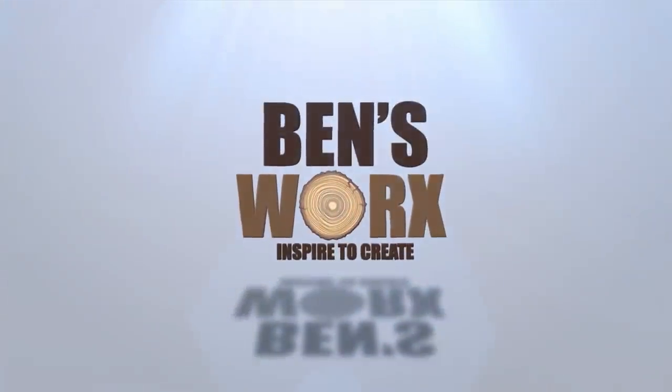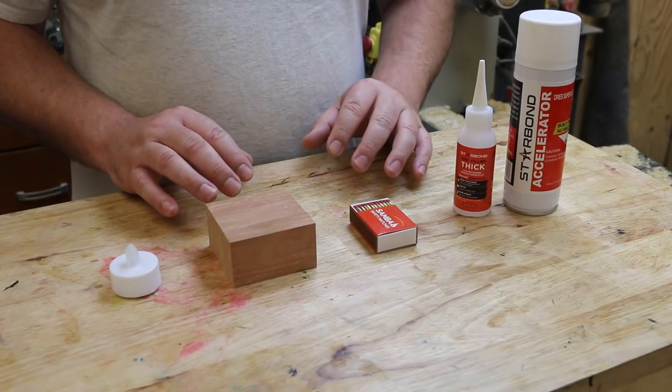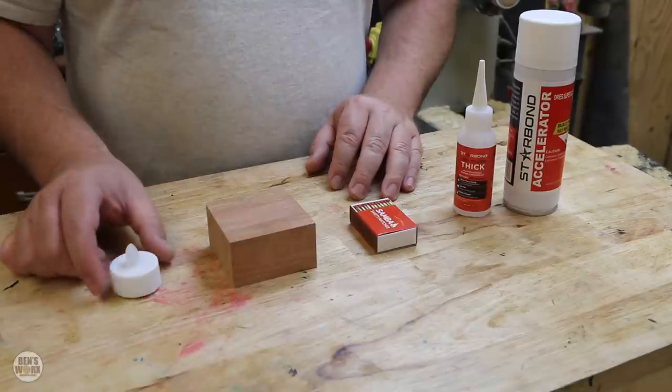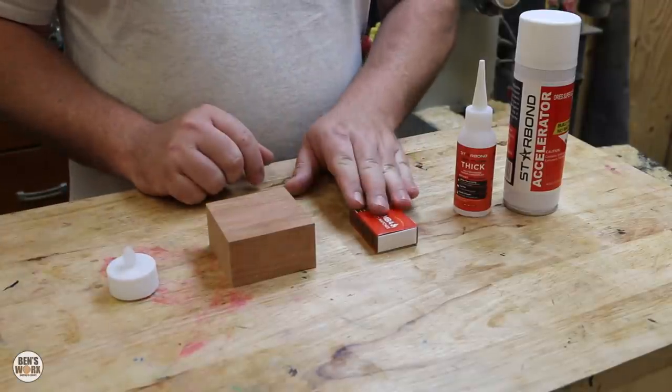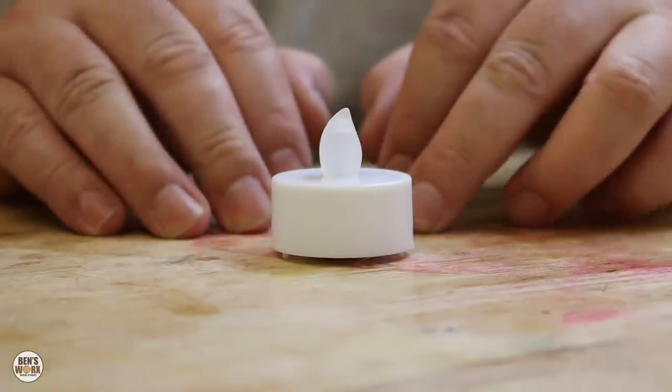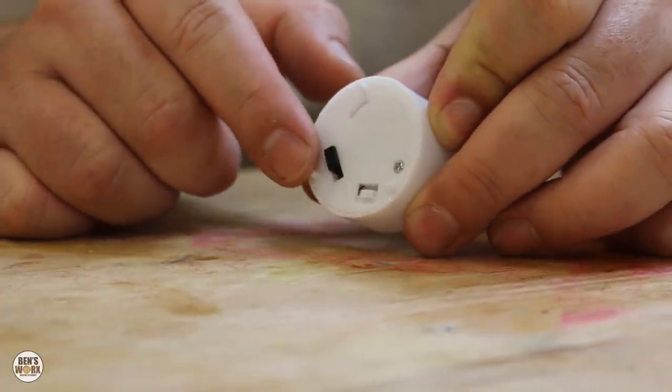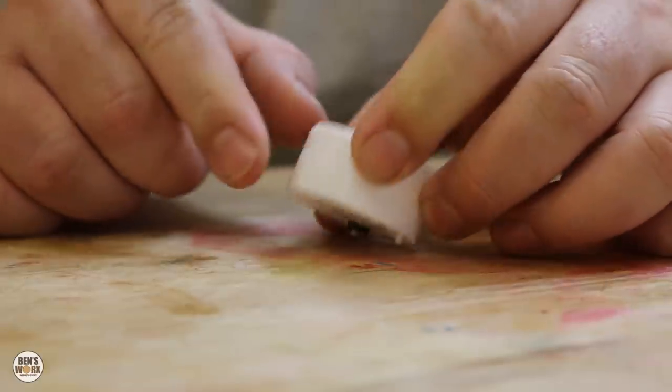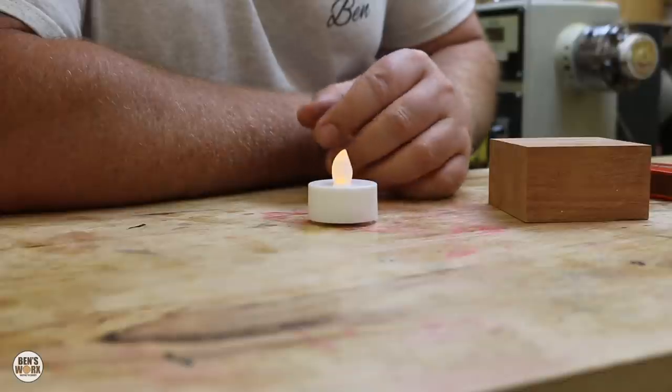Now to make the simple version, you only need these four items. I've got a flickering LED tea light candle, a block of wood, some matches, and some super glue. So the most important item is this tea light candle. Now this is the flickering version. It takes a little button cell battery in the bottom here. It's got a built-in switch, and when you turn it on, the LED light flickers to simulate flame. I'll leave a link for these in the description.